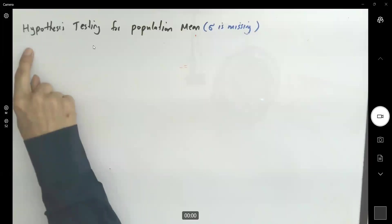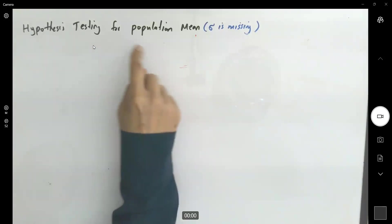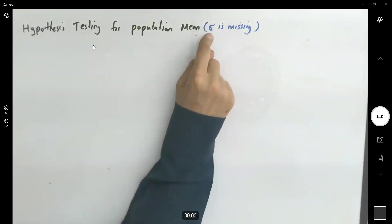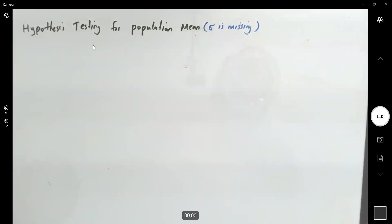So now we're analyzing the case that we are checking the hypothesis testing for population mean and sigma, the population standard deviation is missing. Let's take a look at one example together.